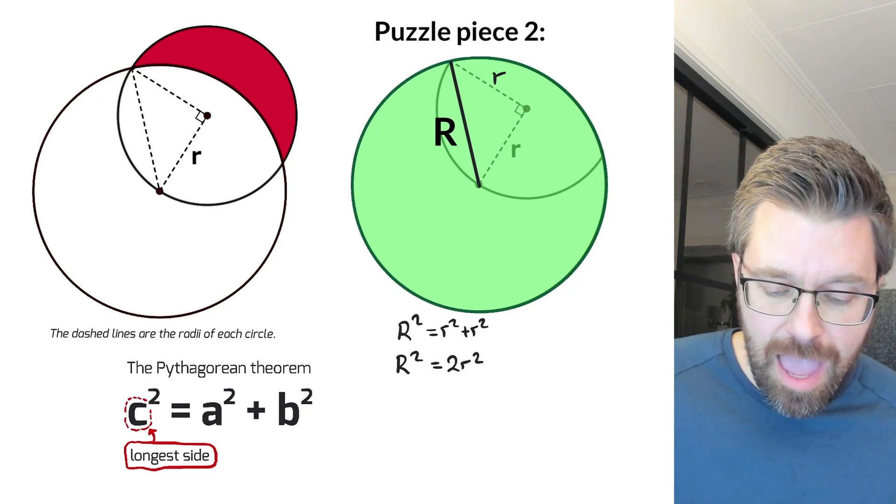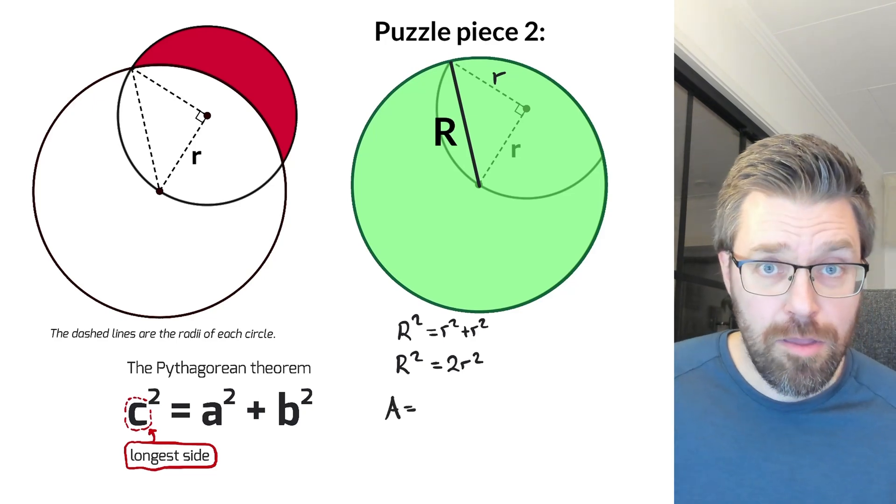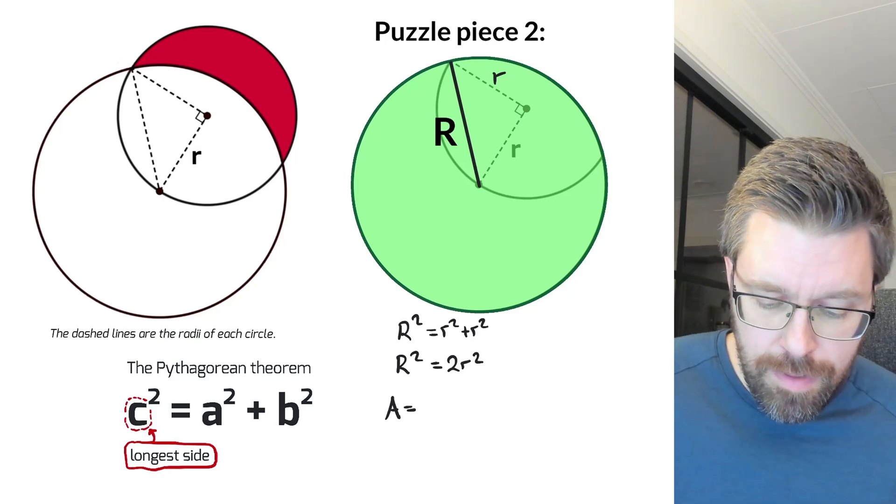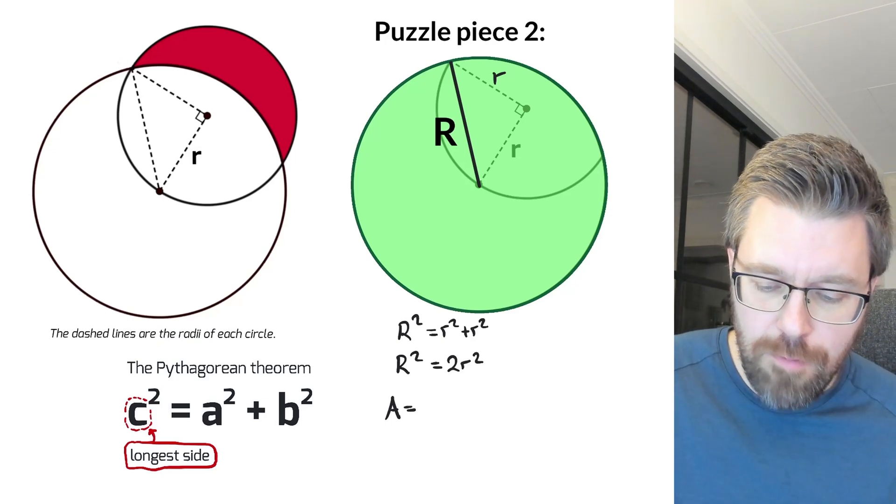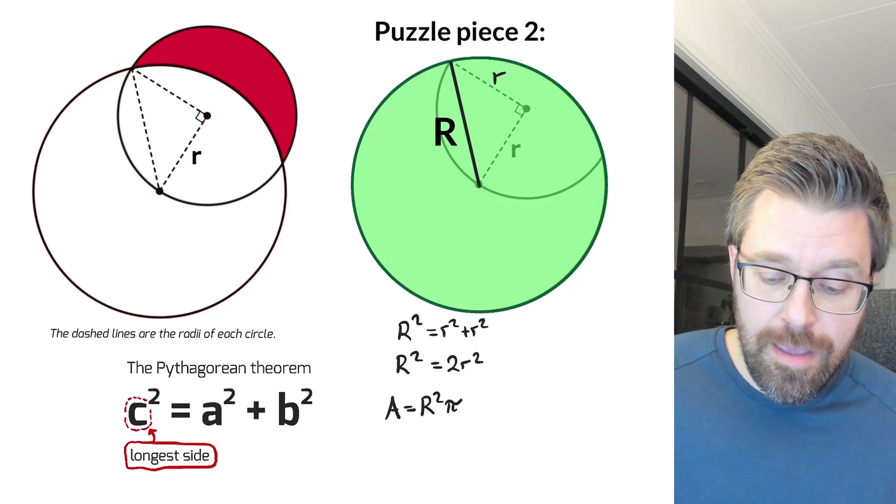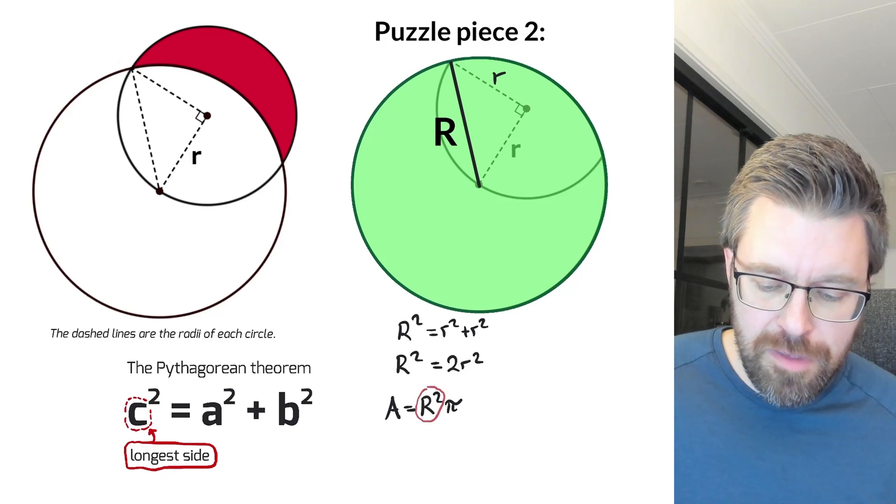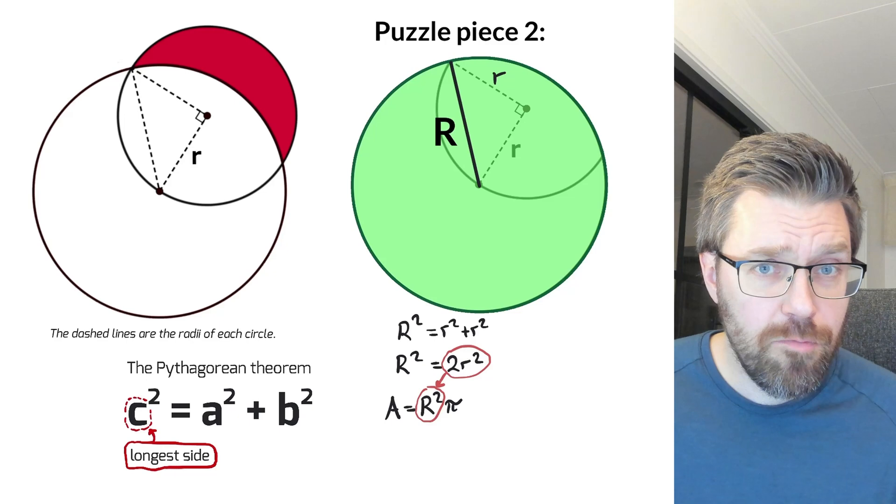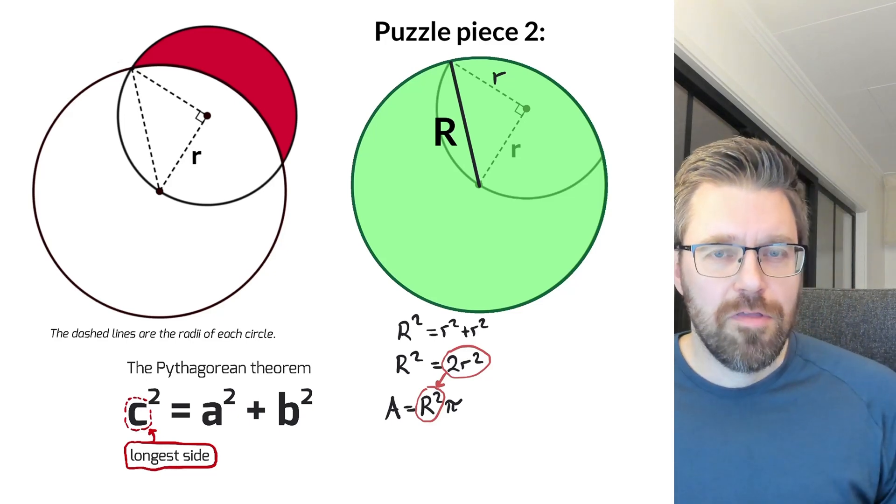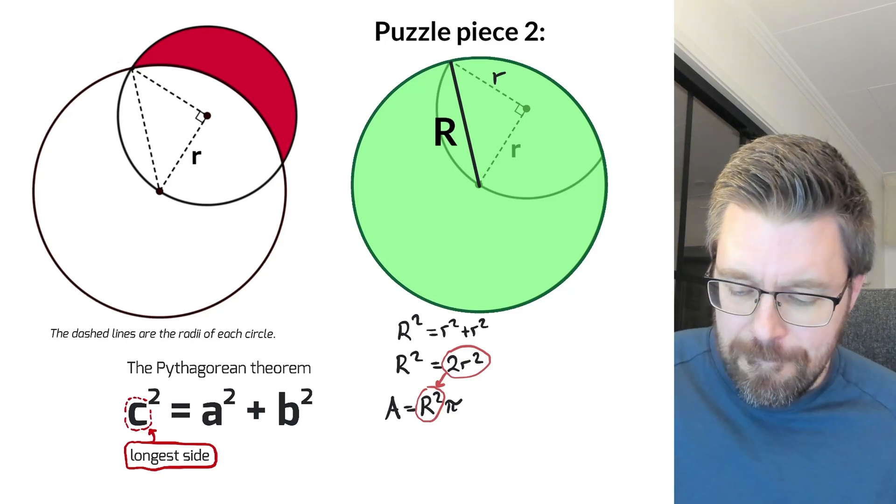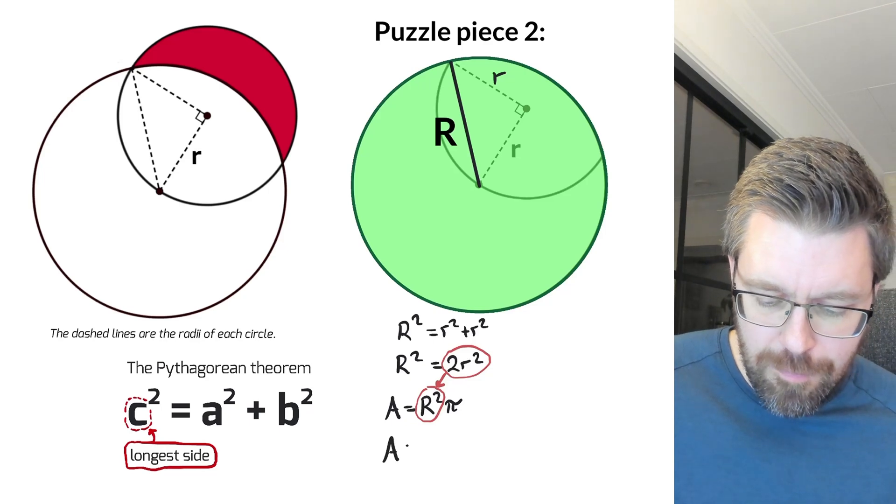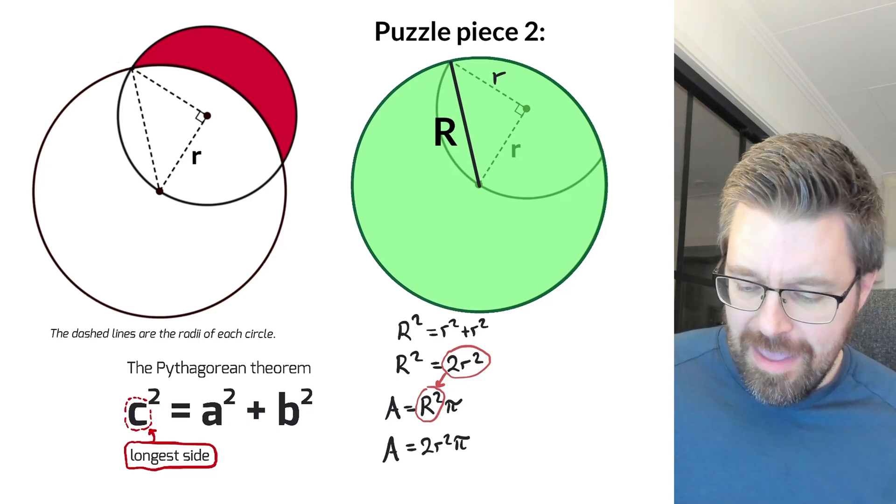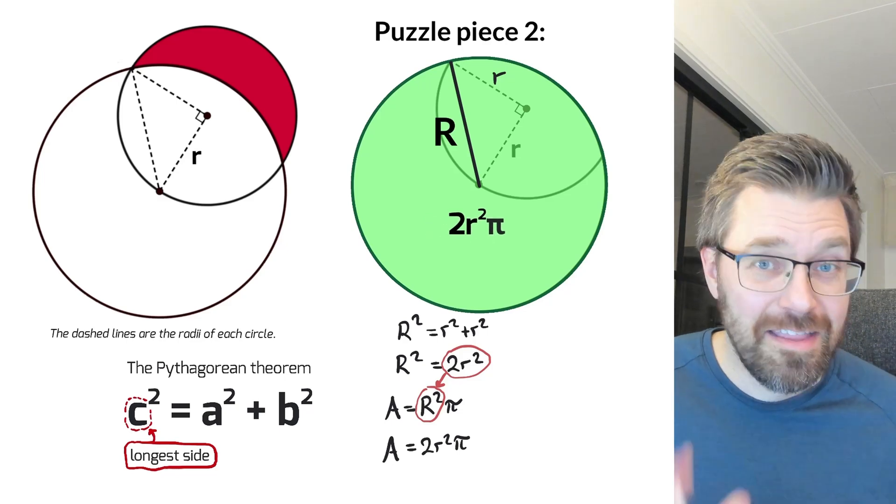And then the area of a circle is radius times itself and times pi. So it is big R squared times pi. But big R squared, we are substituting this with two times r squared, so that we can use only r squared in this expression. The area for this one is two r squared times pi. And I write it in this puzzle piece.